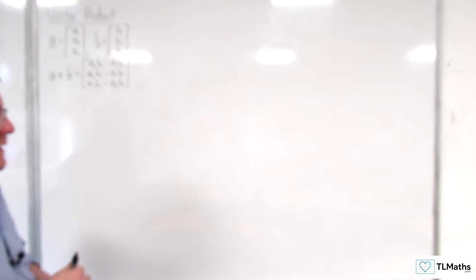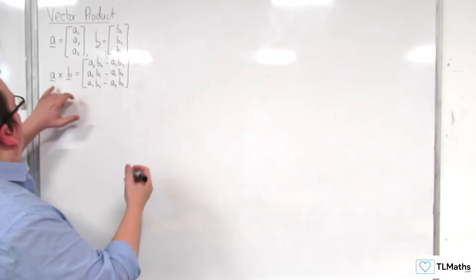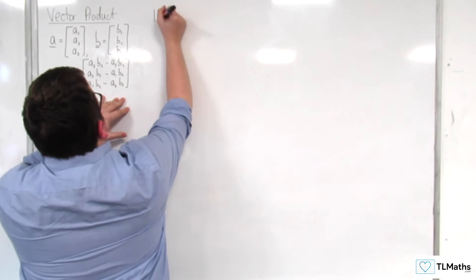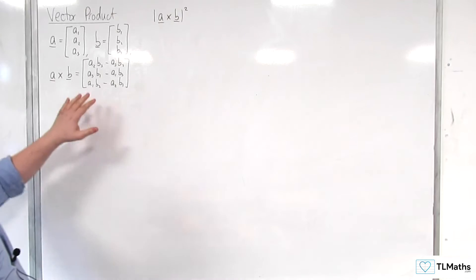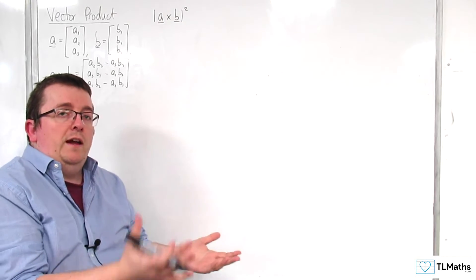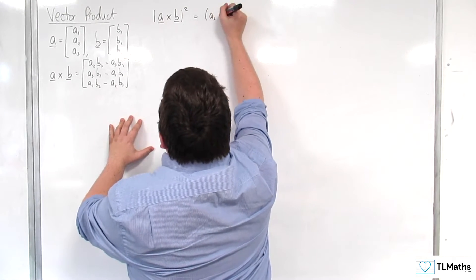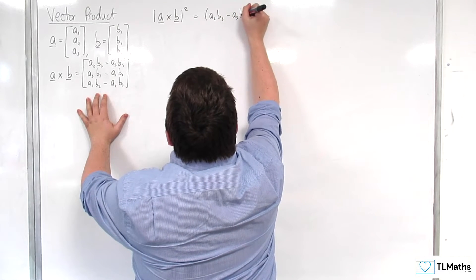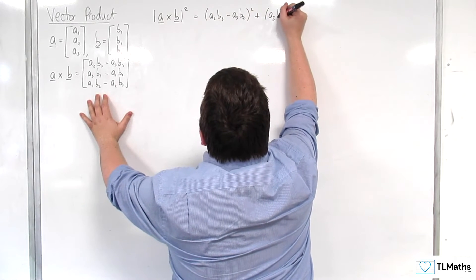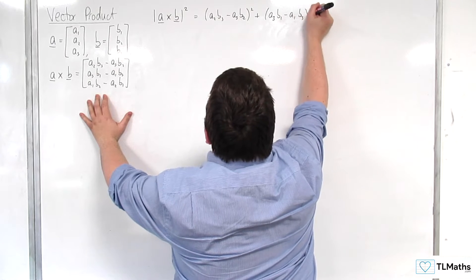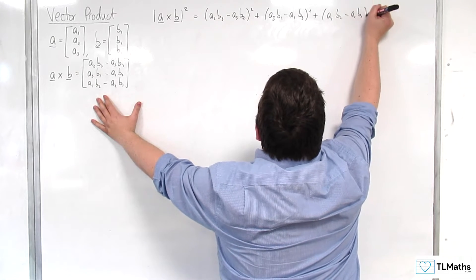What we're going to do is start off by looking at the length of a cross b squared. I'm going to take a look at the length squared. The main reason for that is that I can avoid the square root sign. This would be equal to (a₂b₃ − a₃b₂)² + (a₃b₁ − a₁b₃)² + (a₁b₂ − a₂b₁)².